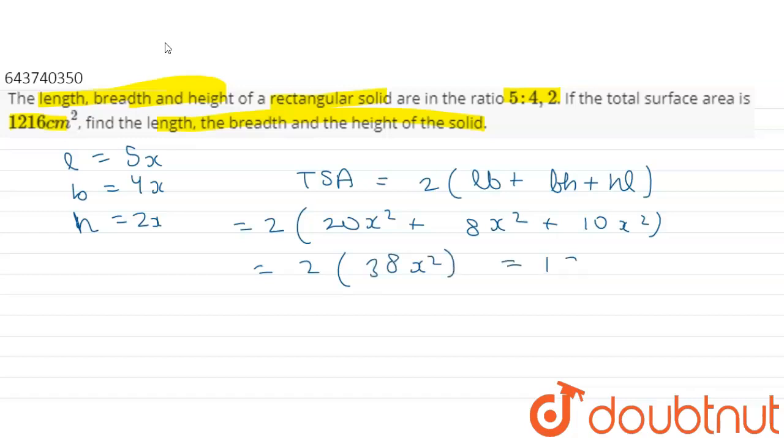This total surface area is given as 1216, from which we get x square equals 1216 divided by 38 into 2.